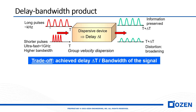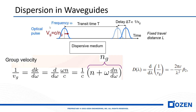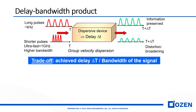Dispersion is very important. We need to calculate the omega derivative of effective index and study the group index. Numerical mode solvers can give you all of these parameters — effective index, group index, dispersion value — over wavelengths. This means you can calculate all of the parameters needed for photonic design.